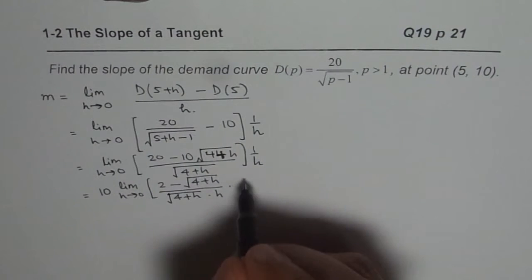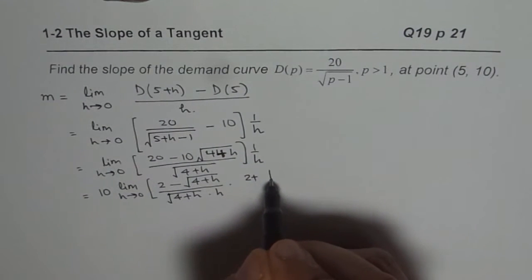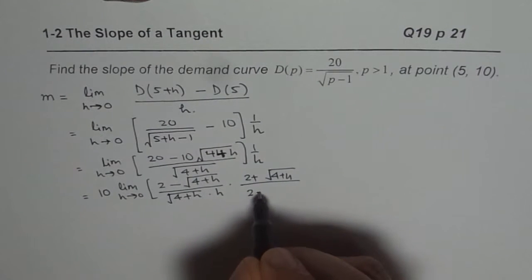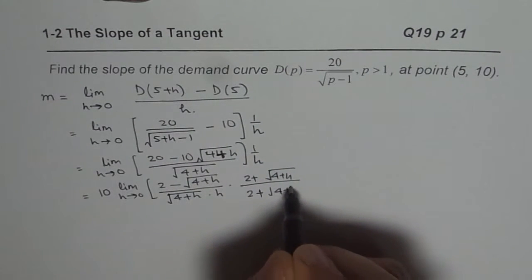And we will rationalize it with 2 plus square root of 4 plus H. That is the conjugate for the numerator. So in this particular example, we are rationalizing the numerator, which we rarely do, actually.